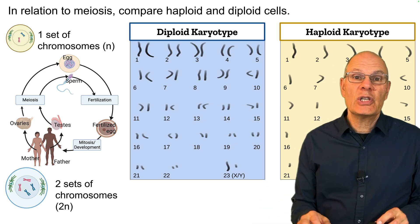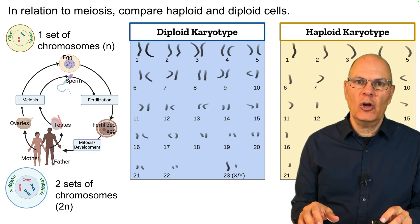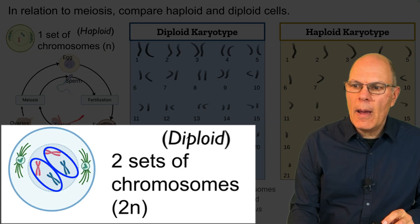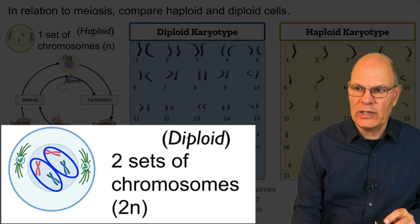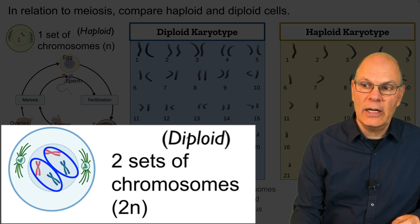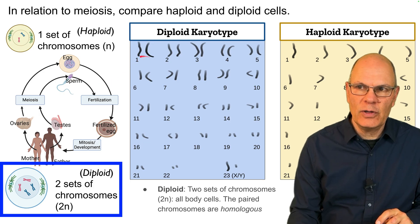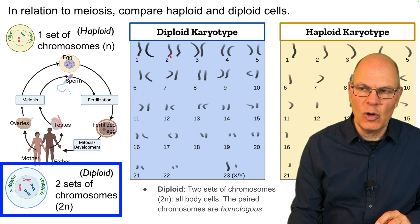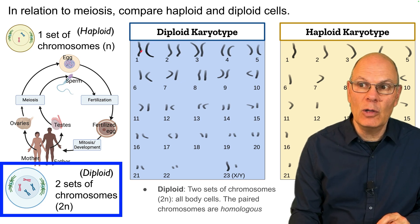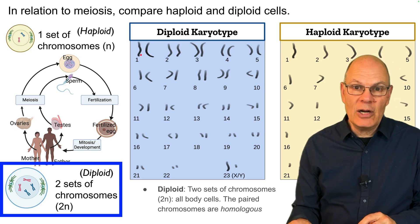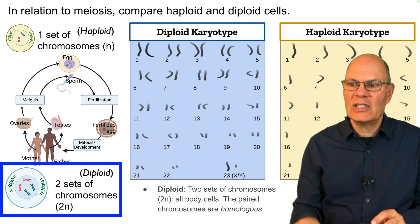In relation to meiosis, compare haploid and diploid cells. These are super important terms for understanding meiosis. Parents have two sets of chromosomes in all of their body cells, with the exception of their gametes. Those chromosomes are paired — for example, here's chromosome one, there are two of them; here's chromosome two, there are two of them. One was inherited from one parent, one from the other. Those pairs are said to be homologous, a term we'll explain in the next slide.